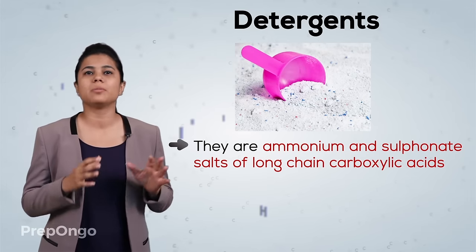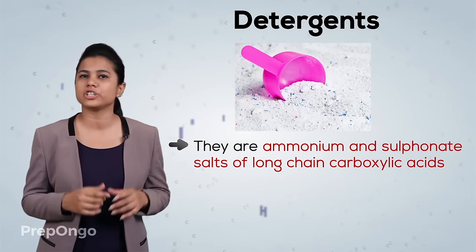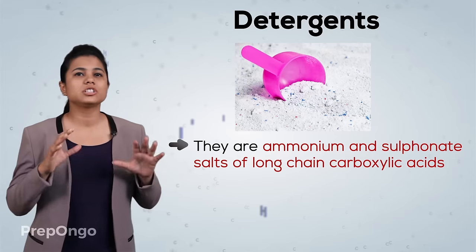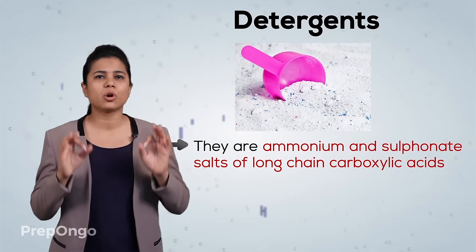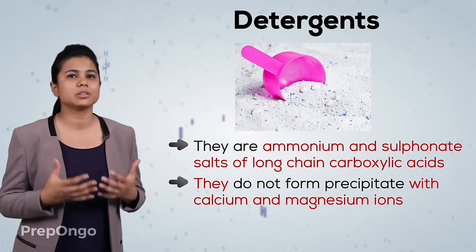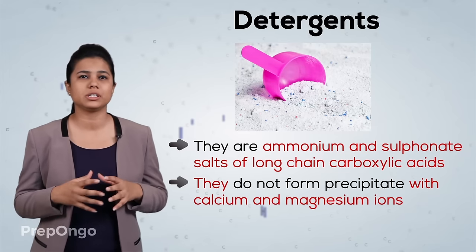The detergents are generally ammonium or sulfonate salts of long chain carboxylic acids. The charged ends of the detergent do not form insoluble precipitate with the calcium and the magnesium ions which are present in the hard water.